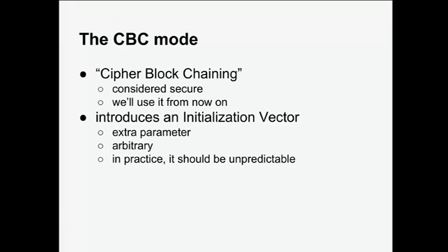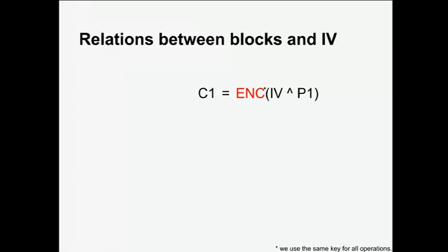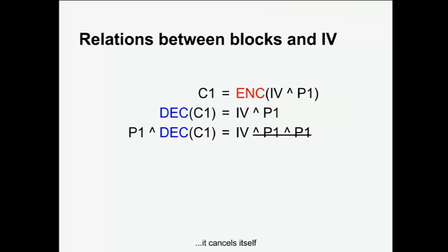The initialization vector should in practice be unpredictable, but it's an extra parameter you can choose to any arbitrary value. We have a full file, we use a key and an IV, and it works on X blocks giving you X blocks — that's how it works on a file. Looking at the CBC formula: the first ciphertext is the encryption of the XOR of IV and the first plaintext block. If we apply decryption on that it cancels out, giving us a relation between the IV, the first plaintext block, and the first ciphertext block.